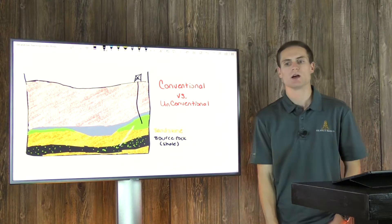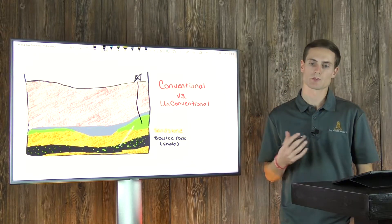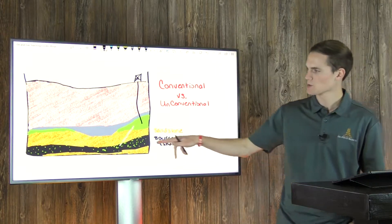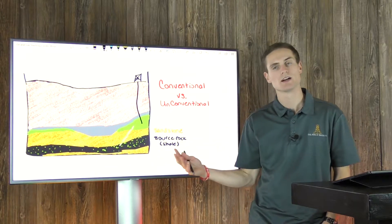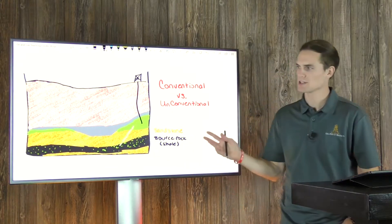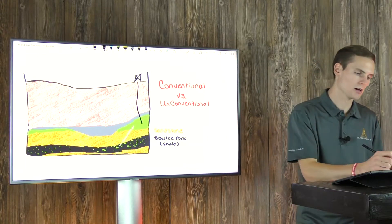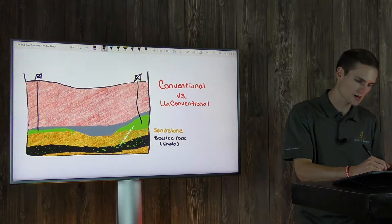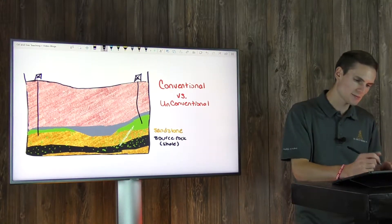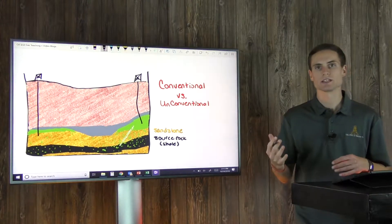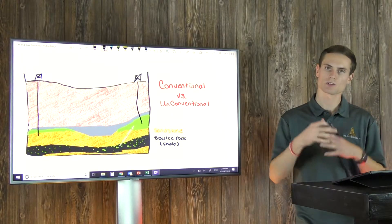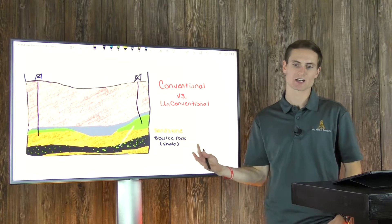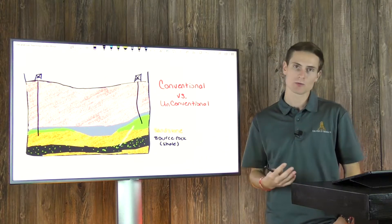Conventional wells are typically associated with vertical wells and older, more historical types of development. Now if we were to try and target the source rock itself, because we know there's a lot of hydrocarbons there — they're still trapped and harder to get out — that's what we call an unconventional well or unconventional reservoir. This is typically when you're going to see horizontal drilling and hydraulic fracturing, because it's oil and gas trapped in the source rock itself — the shale — which is far less permeable and harder to extract.